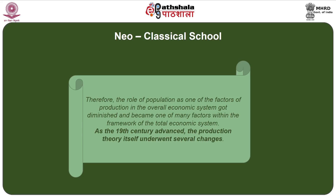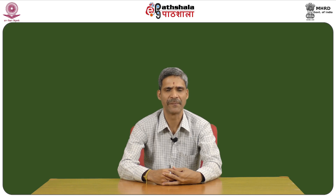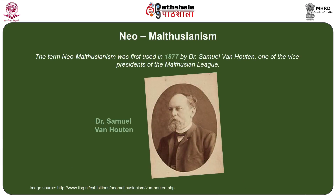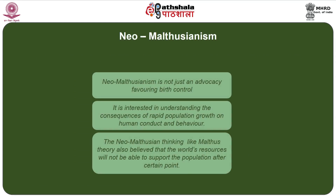As the 19th century advanced further, the production theory itself underwent several changes. The term Neo-Malthusianism was first used in 1877 by Dr. Samuel Van Houten, who was one of the vice presidents of the Malthusian League. Neo-Malthusianism is not just an advocacy favoring birth control; in fact, it was interested in understanding the consequences of rapid population growth on human conduct and human behavior.